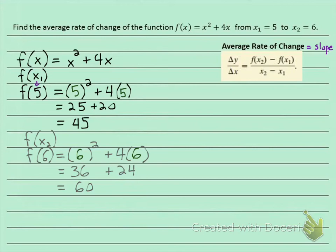Okay, so I have all four things to plug in now. Let's go ahead and do it. The average rate of change is going to be f(x₂) minus f(x₁). So that's 60 minus 45, all over x₂ minus x₁, which is 6 minus 5.